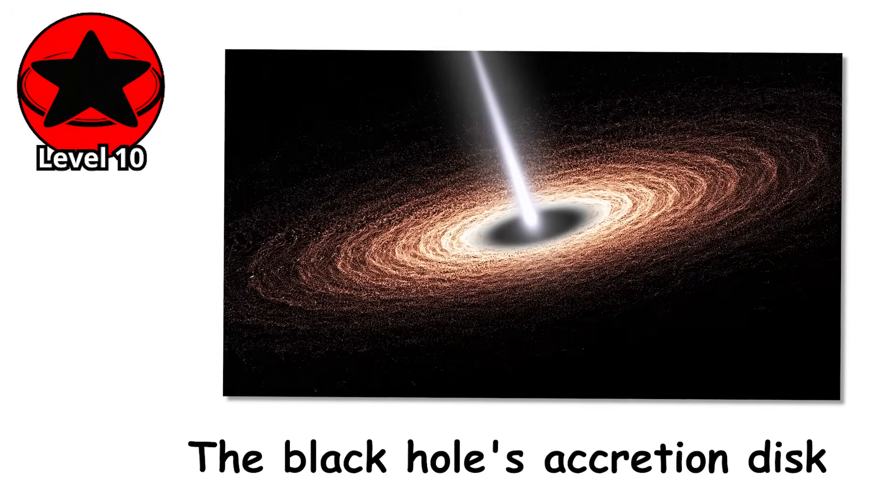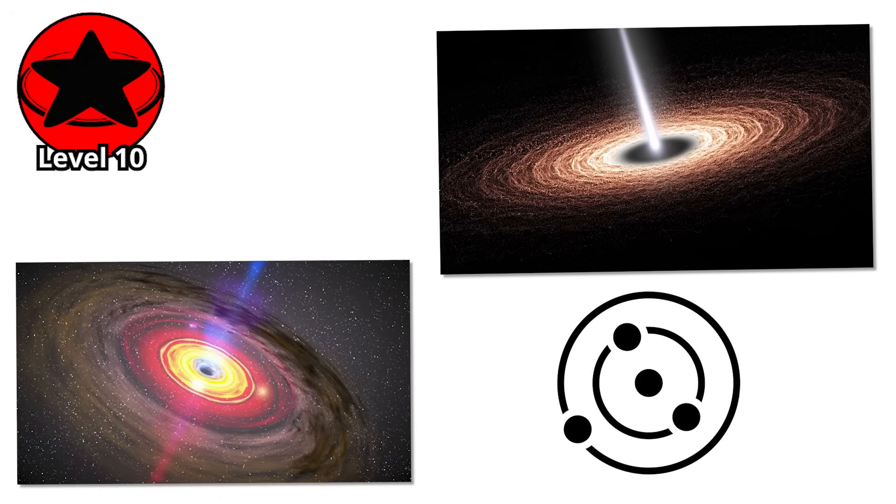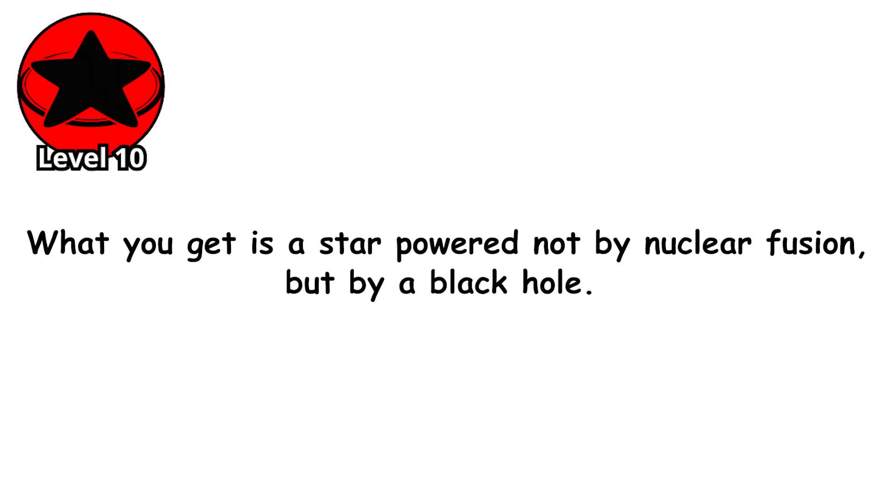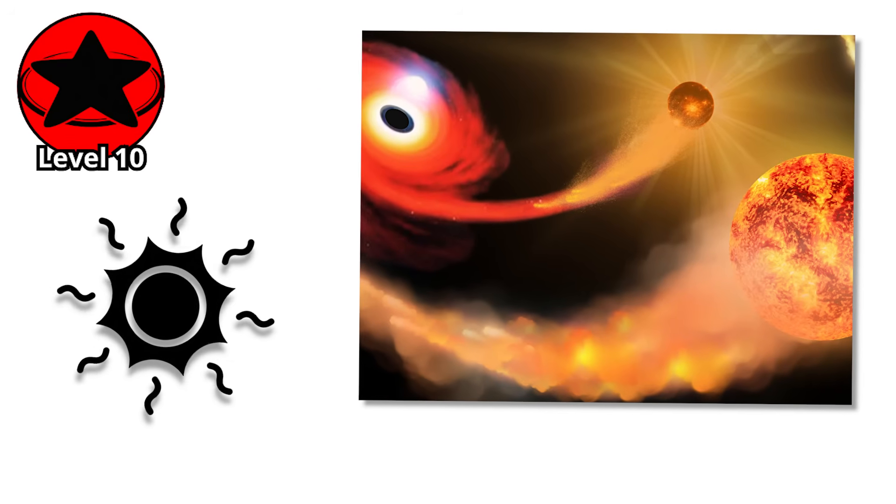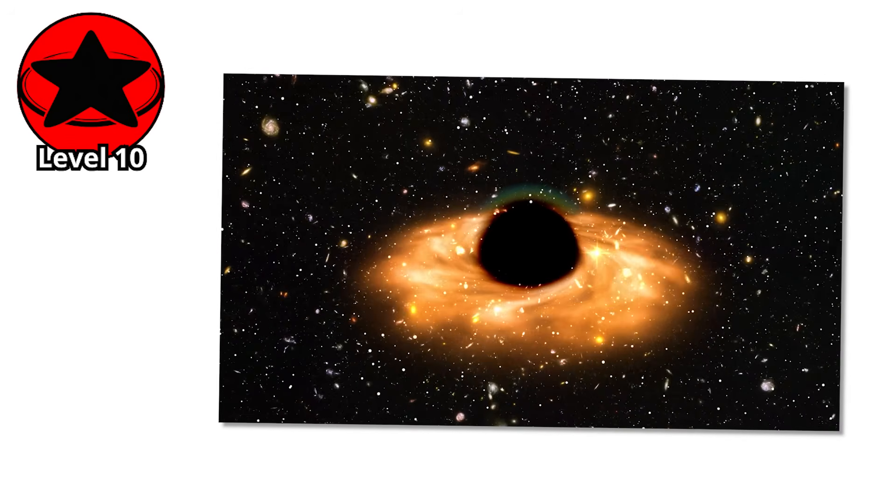The black hole's accretion disk releases so much radiation that it supports the surrounding envelope of gas, preventing further collapse. What you get is a star powered not by nuclear fusion, but by a black hole. The outer envelope continues to feed the black hole, which continues to radiate energy, which continues to support the envelope. A self-sustaining cosmic paradox.